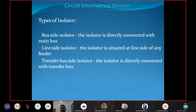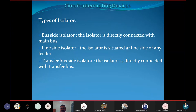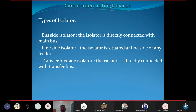The line side isolator is the isolator situated at the line side of any feeder — it is connected on the line side, hence called the line side isolator. The transfer bus side isolator is the isolator directly connected with the transfer bus. So: bus side isolator connects to the main bus, line side isolator connects at the line side of any feeder, and transfer bus side isolator connects to the transfer bus.